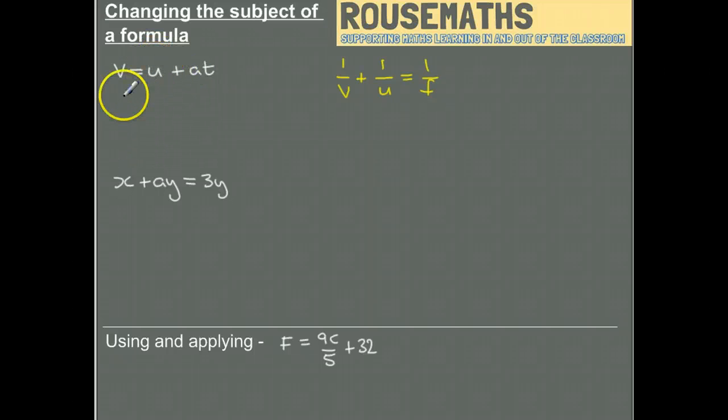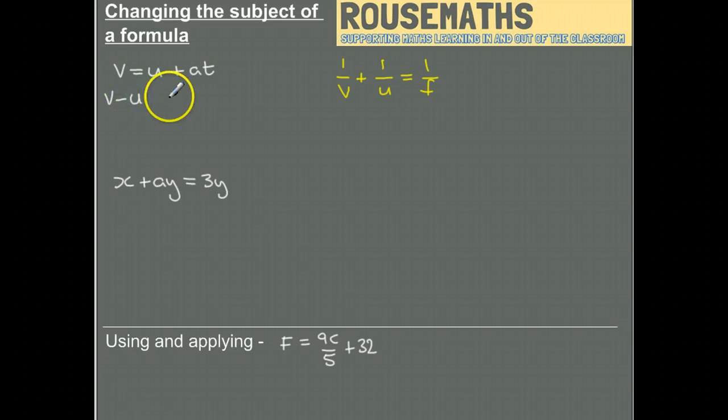If I take away u from the left-hand side, we end up with v minus u. Taking away u from the right-hand side gets rid of the u. I've got the fact that v minus u equals at.